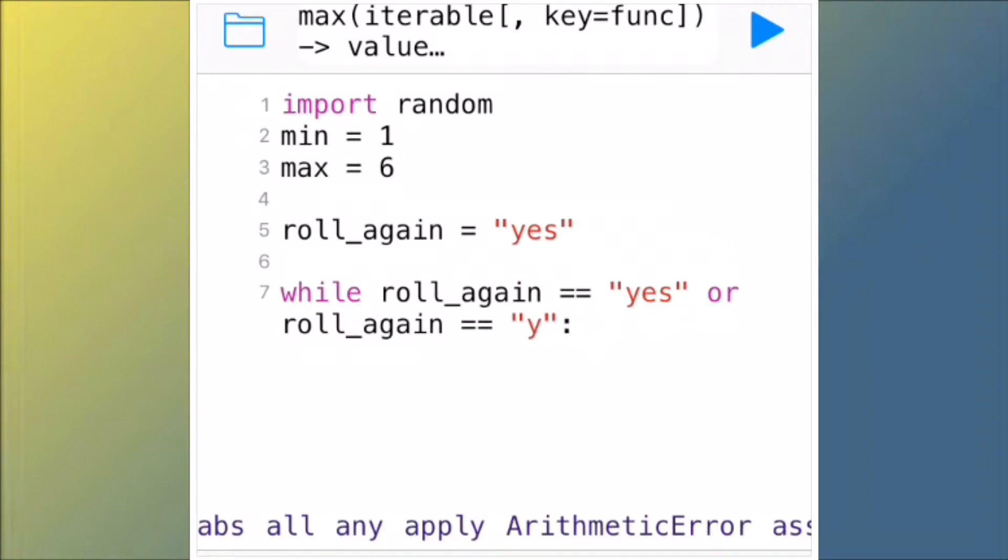Go to the next line. Don't delete this - it might seem weird but just put print space, two quotation marks, capital R in rolling, rolling space the space dices, then three dots, then close quotation marks.